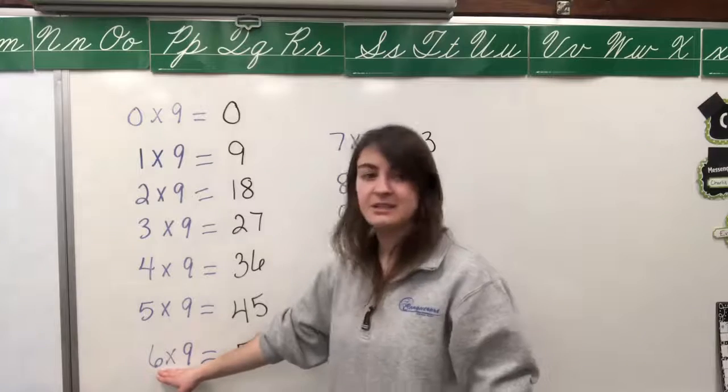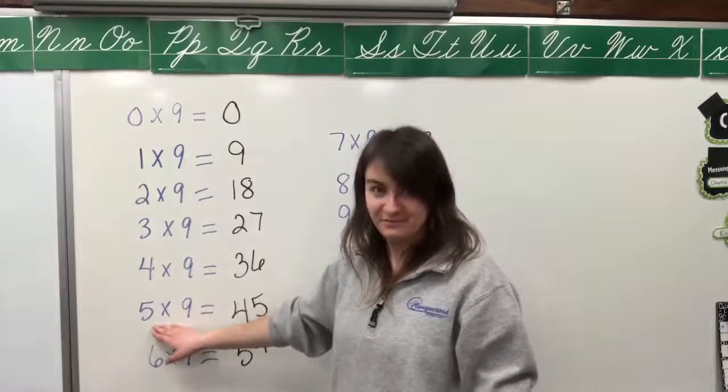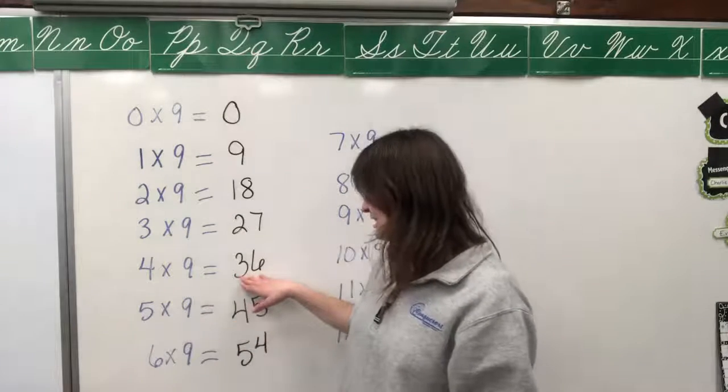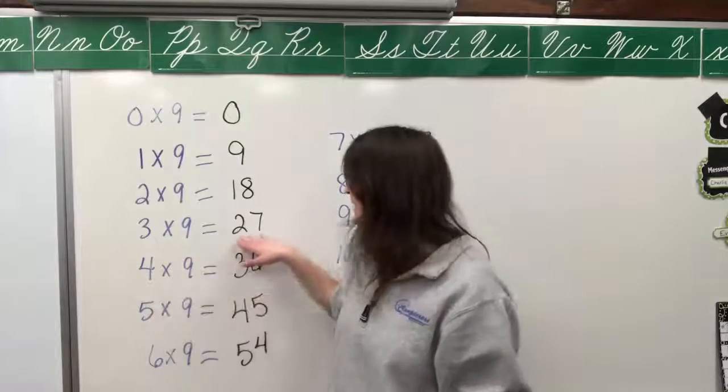Forty-five divided by nine equals five. Thirty-six divided by nine equals four. Twenty-seven divided by nine equals three.